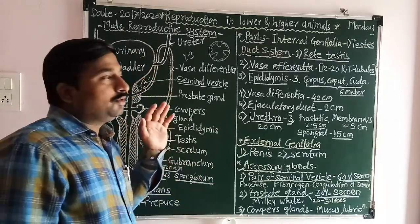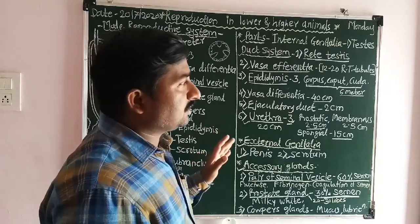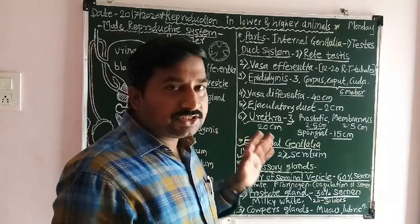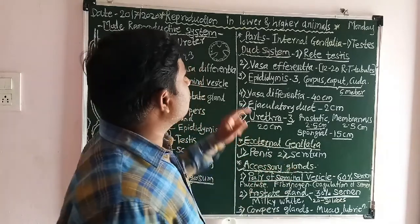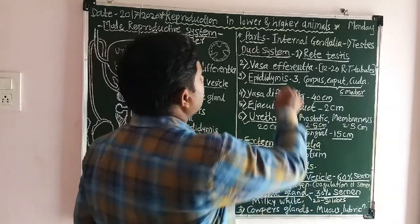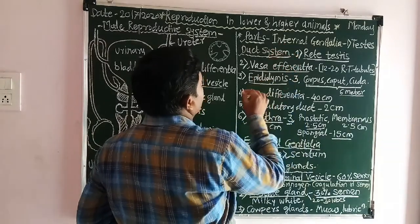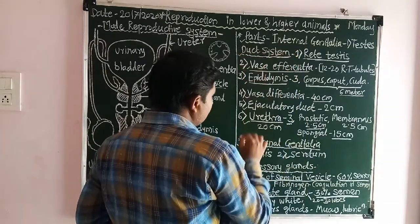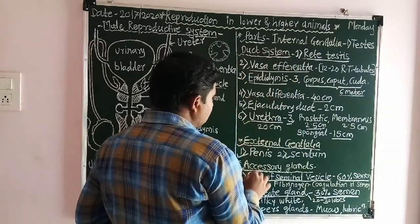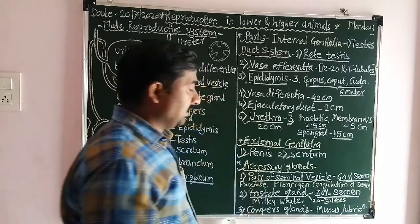The male reproductive system is divided into four parts: the internal genitalia, the duct system, the external genitalia, and the accessory glands.